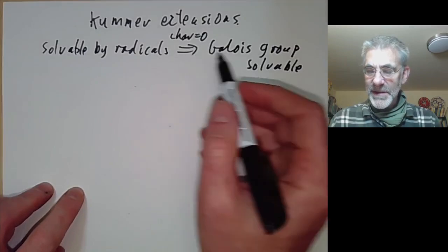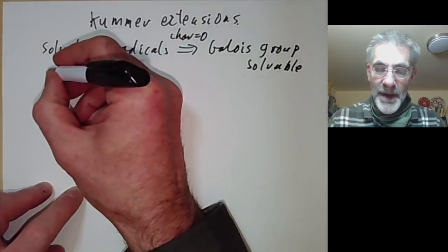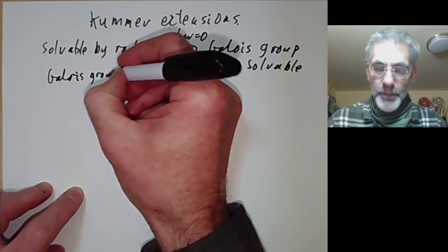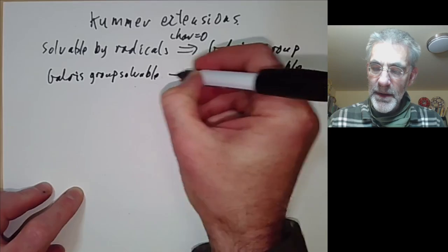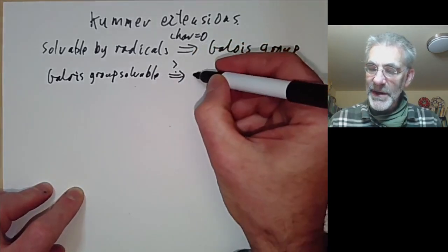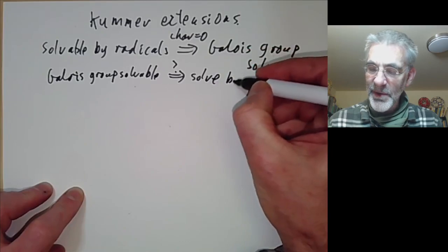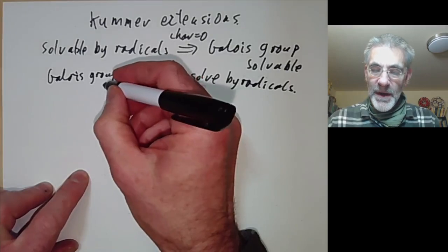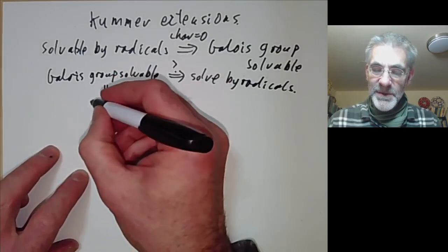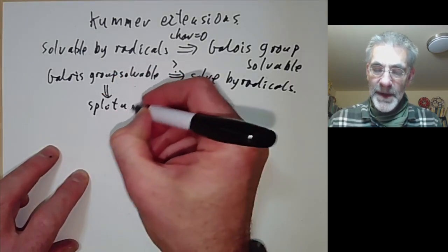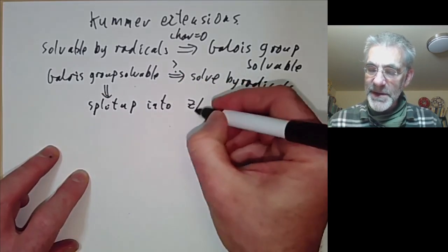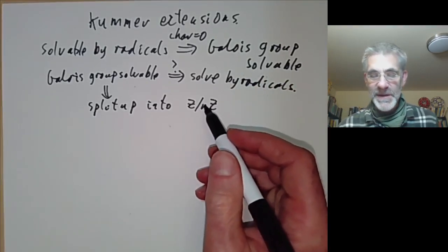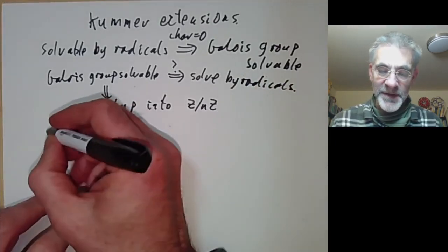What we want to do is think about the converse: if the Galois group is solvable, does this mean we can solve the polynomial by radicals? If a Galois group is solvable, this means the Galois group can be split up, in some sense, into groups that are cyclic — and if we want, we can split it up into groups that are cyclic of order n. So this suggests the following problem.